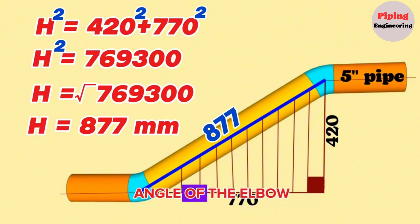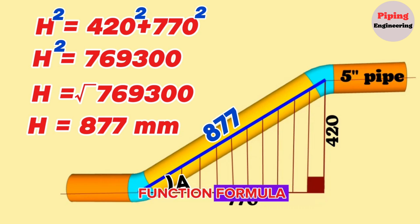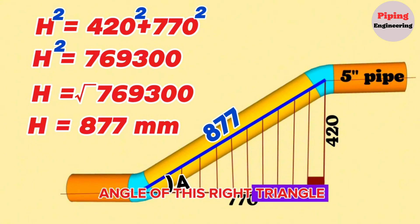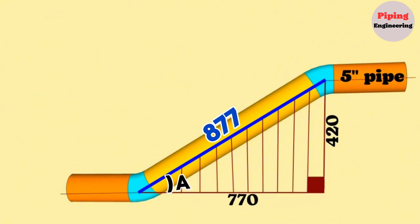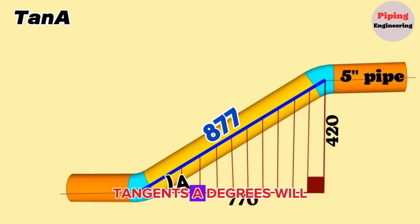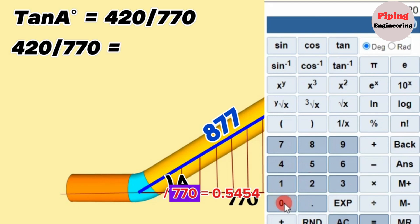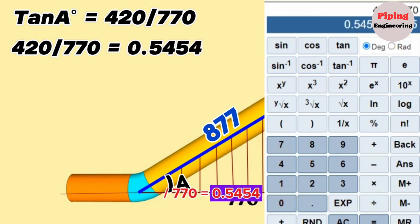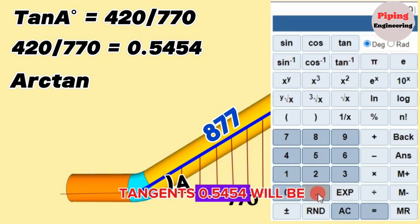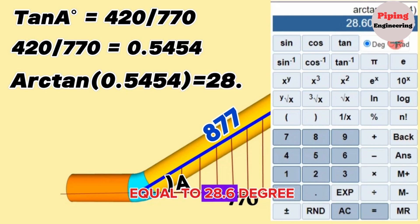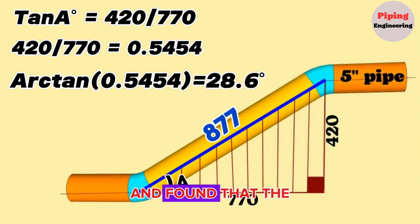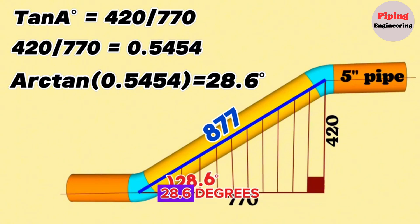Now let's mark the cut angle of the elbow with A and calculate this angle. We will use the trigonometric function formula to calculate the acute angle of this right triangle, or the intercept angle of the elbow. According to the trigonometric function, tangent A degrees equals 420 divided by 770. Using a scientific calculator, 420 divided by 770 equals 0.5454, and arctangent of 0.5454 equals 28.6 degrees. So the cutting angle of the first elbow is 28.6 degrees.